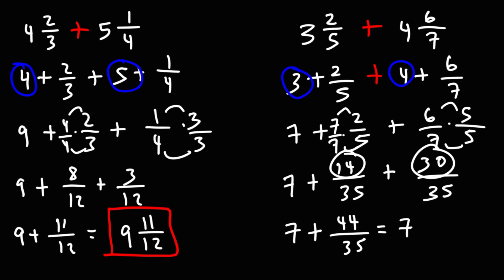So what I'm going to do is I'm going to break it apart. 44 is 35 plus 9. 35 is the highest multiple of 35 just under 44. And 44 minus 35 is 9. So that's where I get the two numbers from.